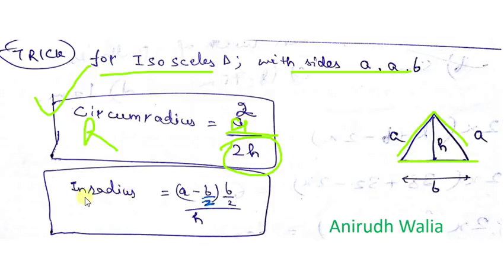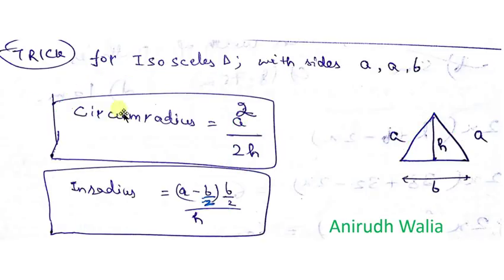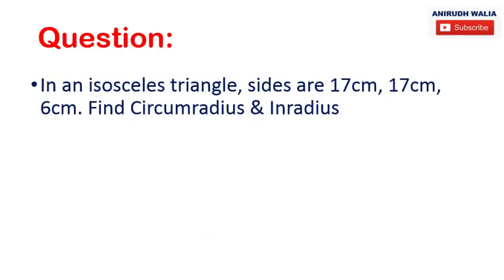And inradius, denoted by small r, equals (a minus b) by 2 times b by 2 divided by H. Now I have the formulas noted down and the question noted down. Circumradius and inradius, how to find them.